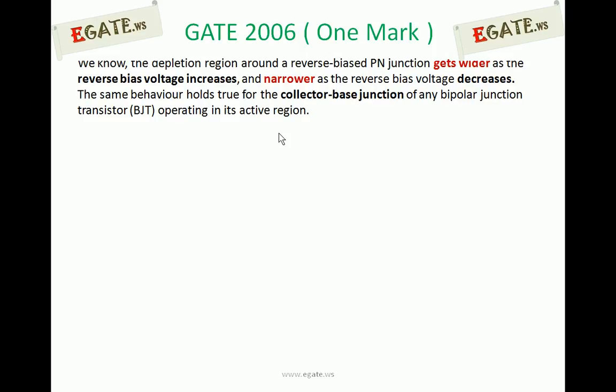Every PN junction consists of a depletion region under open circuit. Under forward bias, the depletion region reduces. Under reverse bias, the depletion region increases. Even under reverse bias, if you increase the reverse voltage, the depletion region gets even wider.